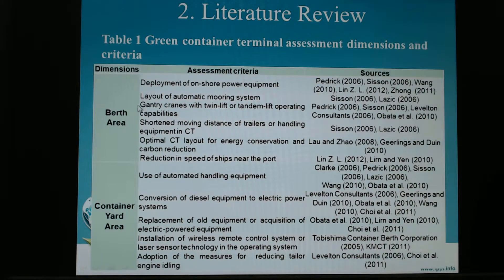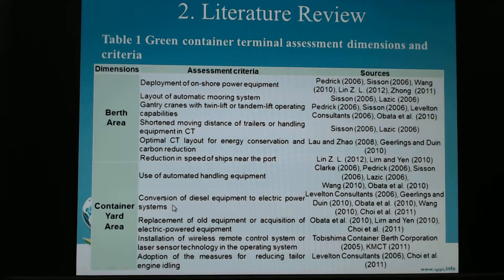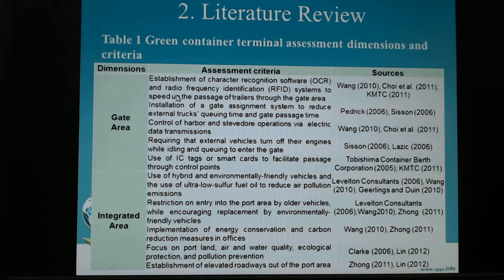For the berth area, assessment criteria include deployment of onshore power equipment — sometimes called AMP, Alternate Marine Power, or shore power — automatic mooring systems, and gantry cranes with twin lift or tandem lift capability. For the container yard area, a key criterion is conversion of diesel equipment to electric power — for example, converting diesel RTGs to electric RTGs to reduce emissions.